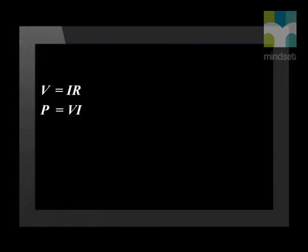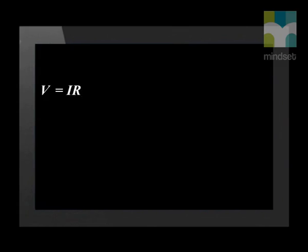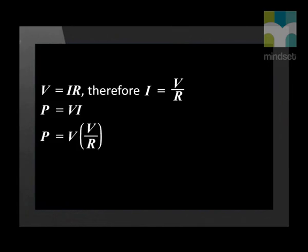Now let's derive the last equation. Again, we start with our two equations: Ohm's law, V equals I times R, and the power equation, P equals V times I. But this time, instead of substituting for V in the power equation, we use Ohm's law and substitute for I. We first need to make I the subject of the formula using Ohm's law. Therefore, I equals V over R. We can now substitute this into our equation for power. Therefore, power equals V times V over R, and this then becomes P equals V squared over R.